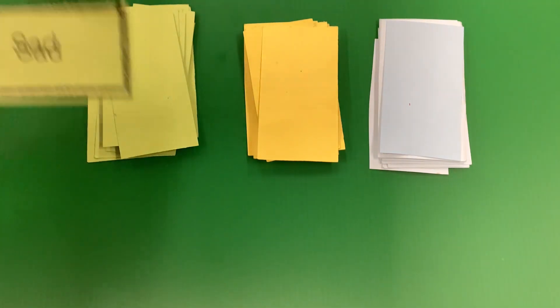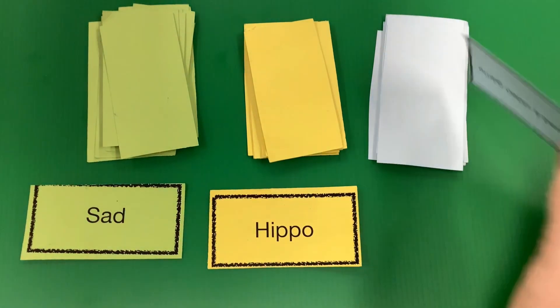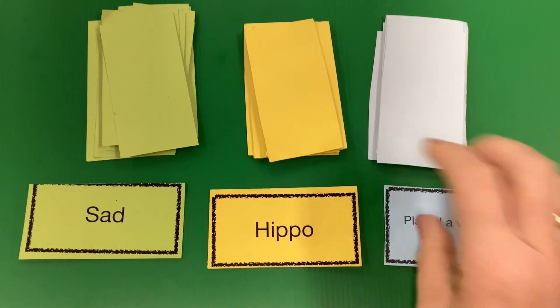You've got three piles of cards and you're going to turn one card over from each pile. So far we have a sad hippo who played a video game.